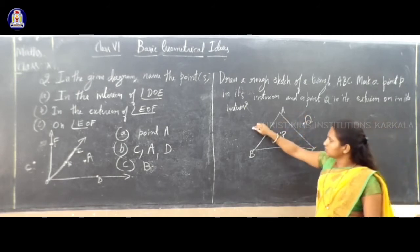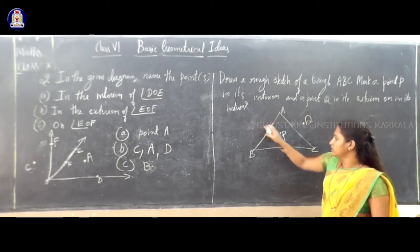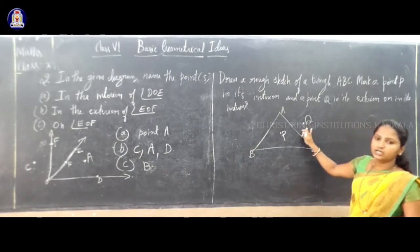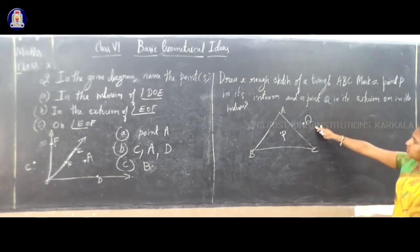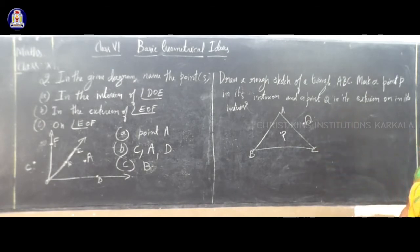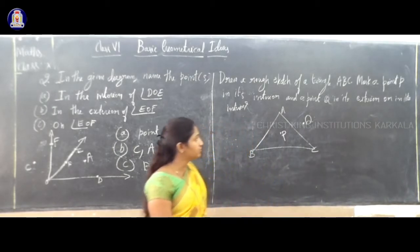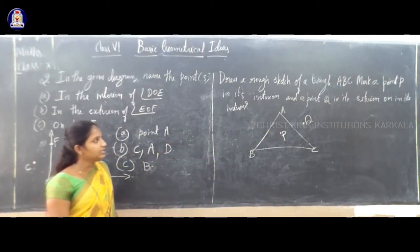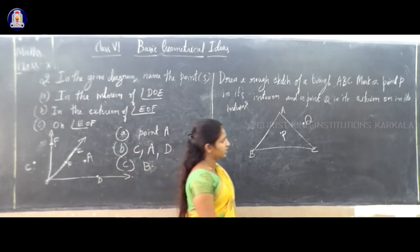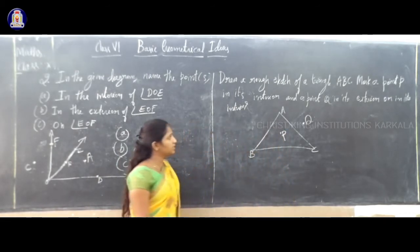Q can be placed here, or here, or here outside the triangle. So Q is an exterior point — outside the triangle. P is interior — inside the triangle. Clear. So first draw a sketch of the triangle, then mark point P in its interior and point Q in its exterior.